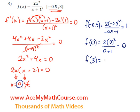And f of 3. 2 times 3 squared over 3 plus 1. That is 4.5.